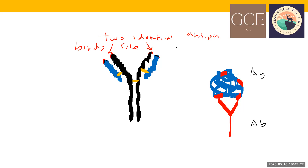Why are antibodies very important? They are highly specific to the antigen and are produced in large numbers. When there's an infection, B-cells change to plasma cells and produce billions of antibody molecules, which are then released into the blood.